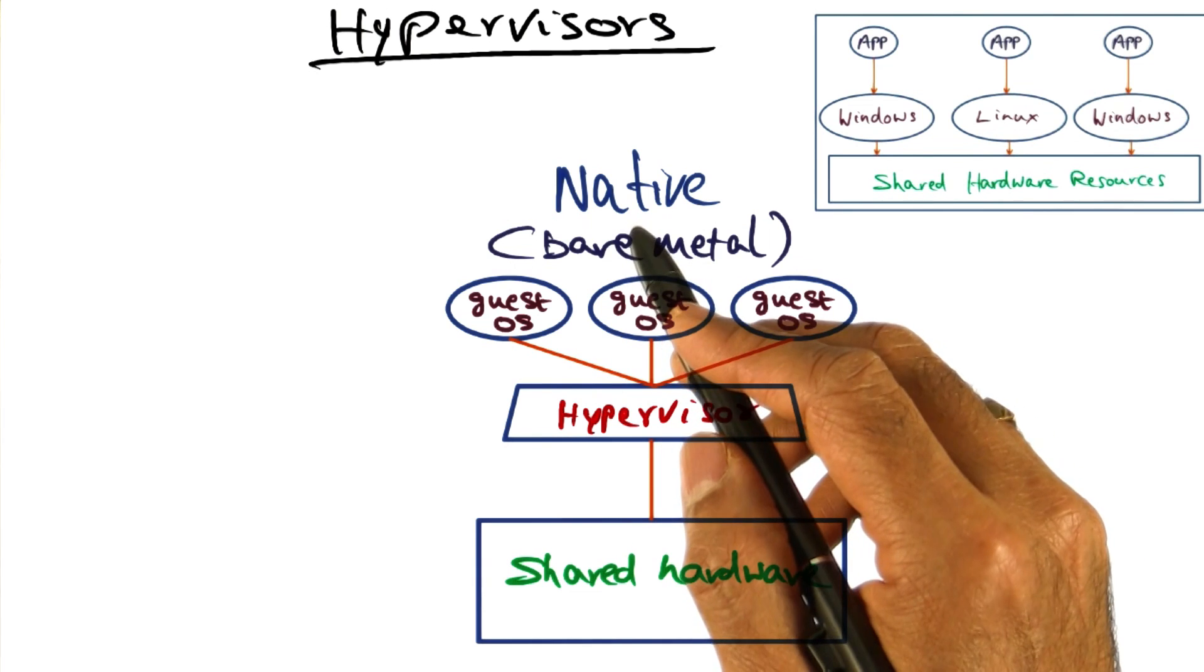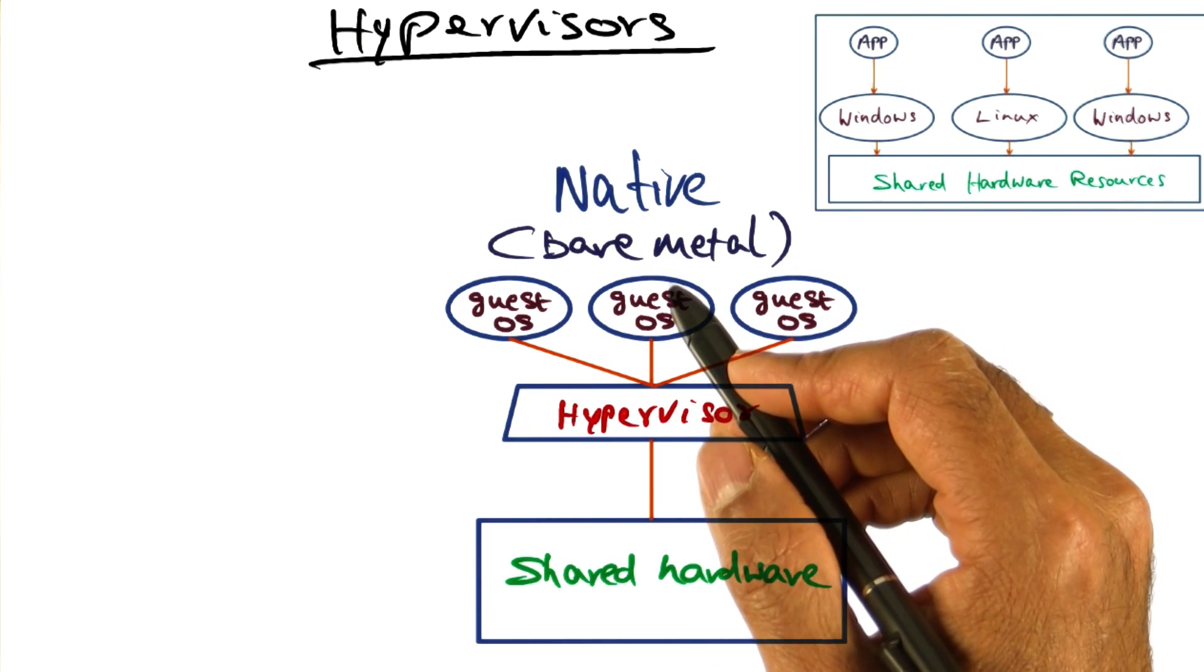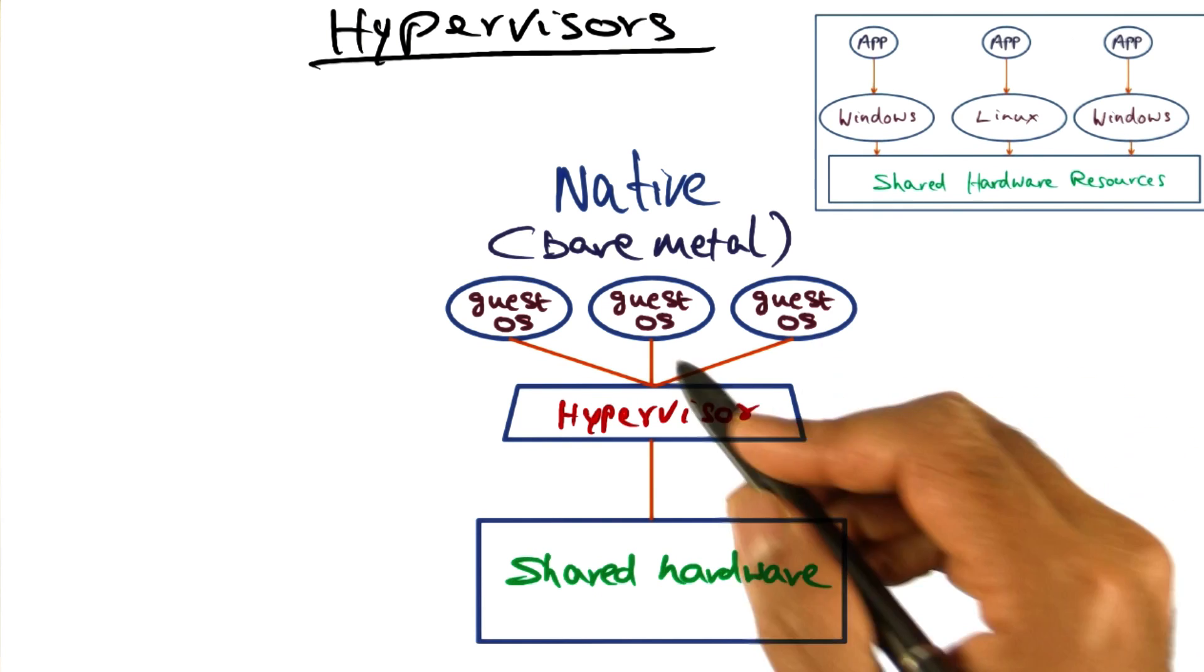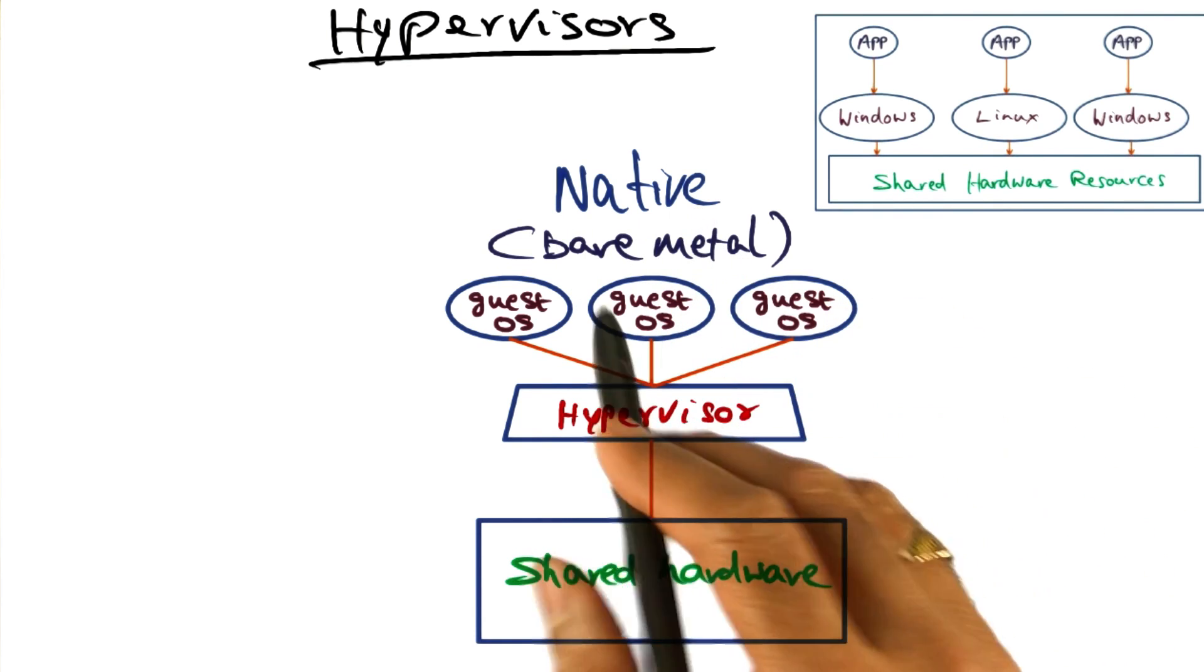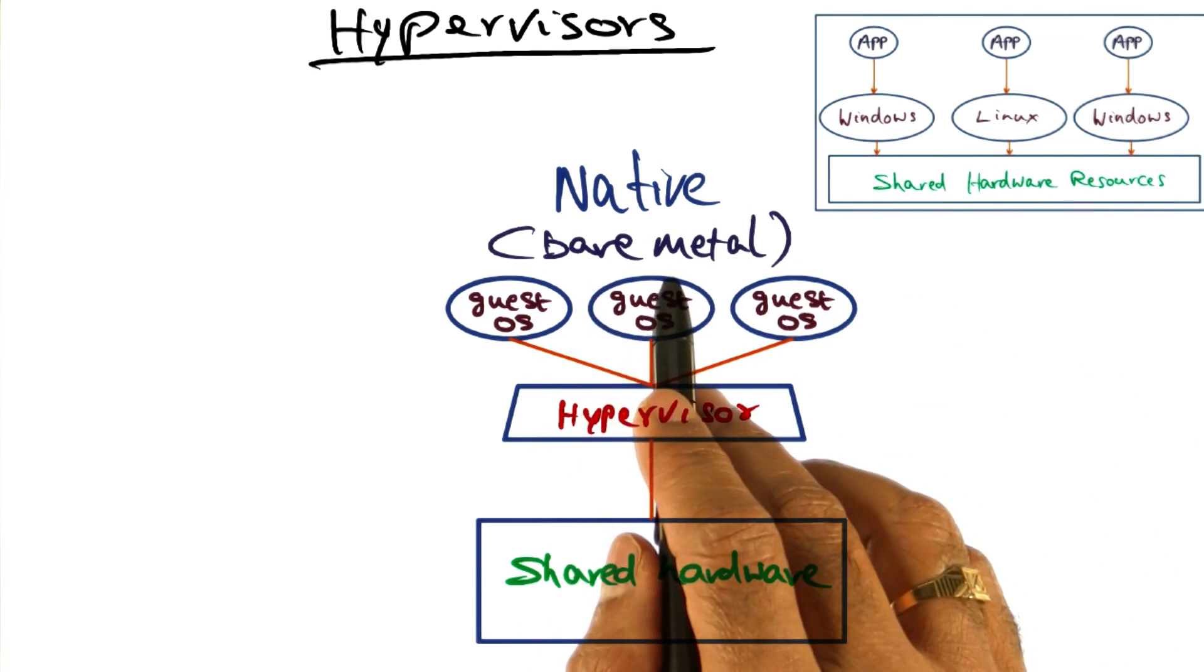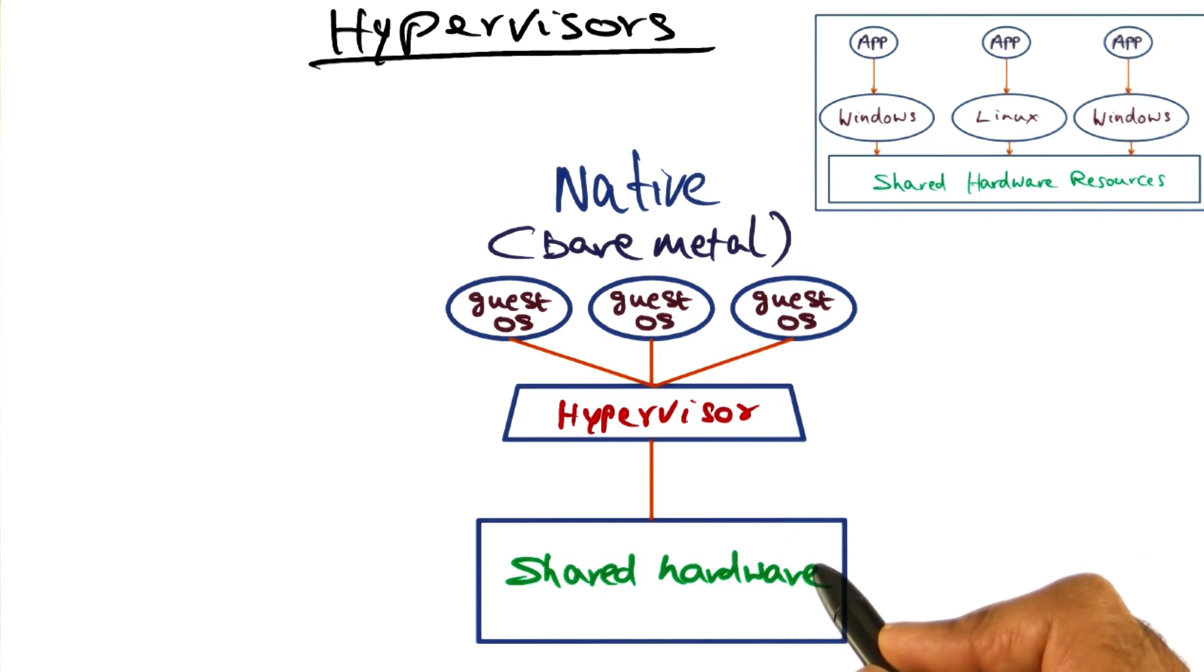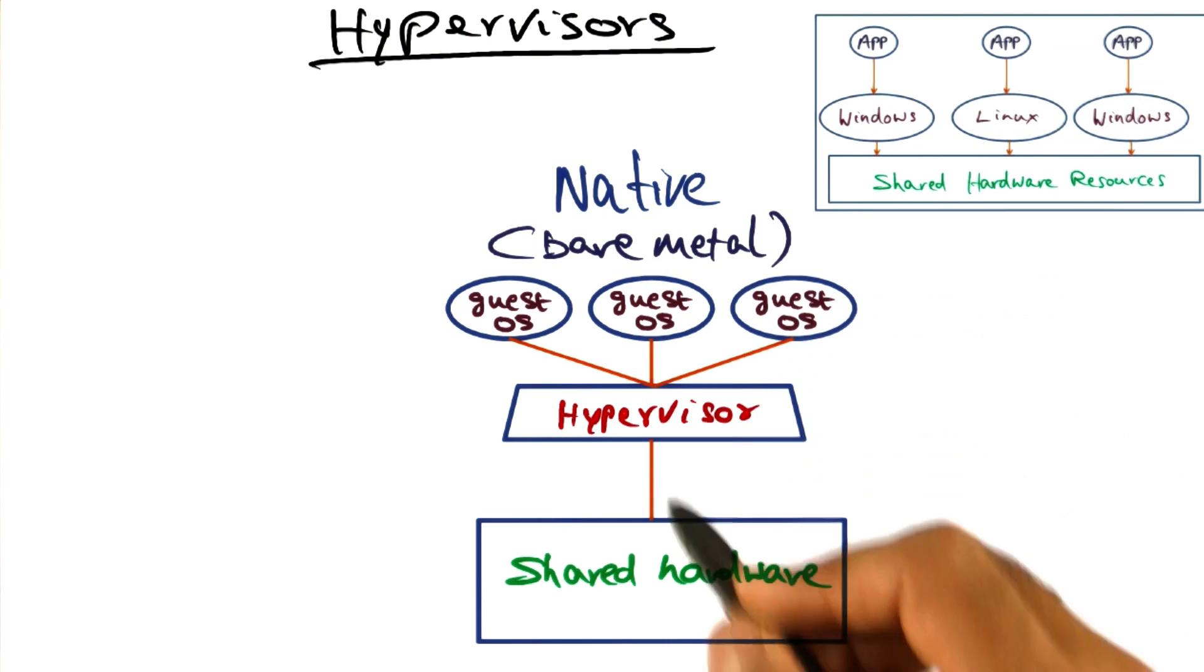Now I should point out that there are two types of hypervisors. The first type is what is called a native hypervisor or bare metal, meaning that the hypervisor is running on top of the bare hardware. And that's why it's called a bare metal hypervisor or a native hypervisor.